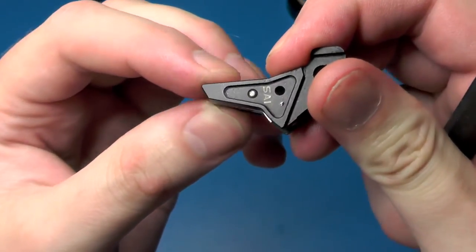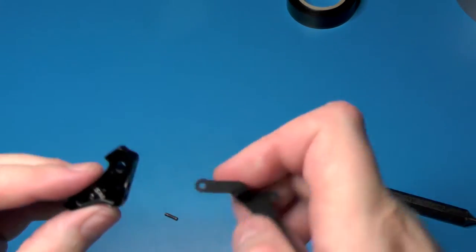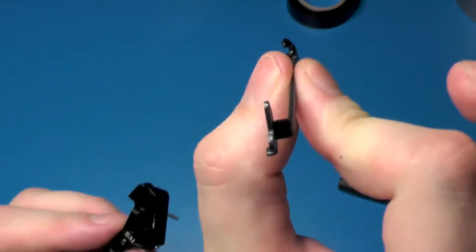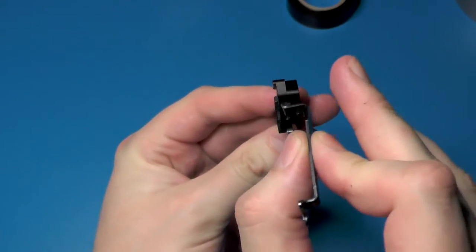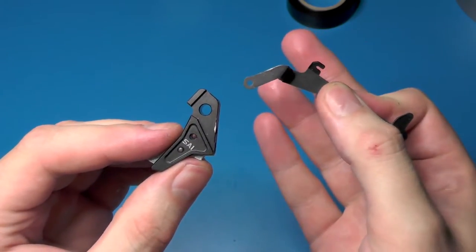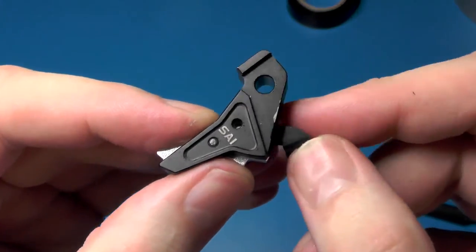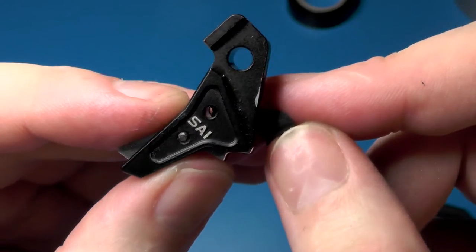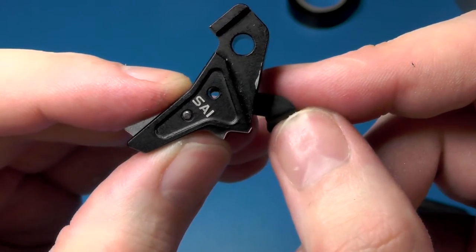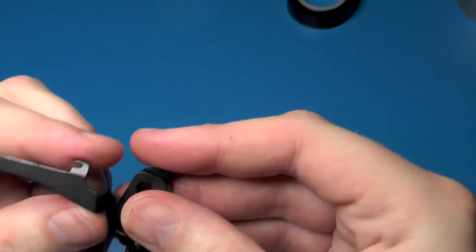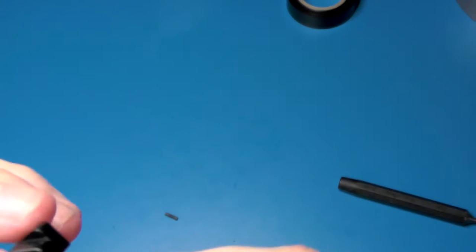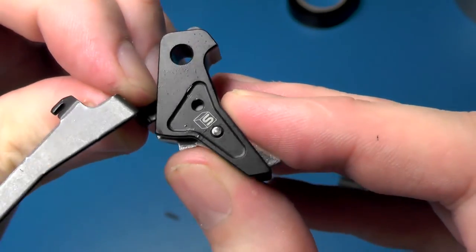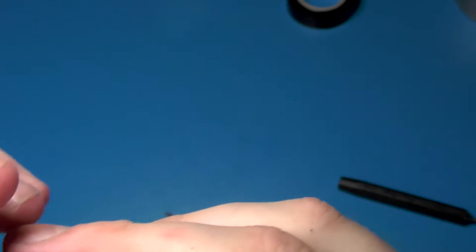So there you can see the spring mechanism. Next up we want to put in the trigger bar and it goes in like this. And it's going to go into the upper hole. So let's see if we can line it up in here. There abouts, not really rocket science here. You just need to make sure that the holes line up and then put the pin in place.